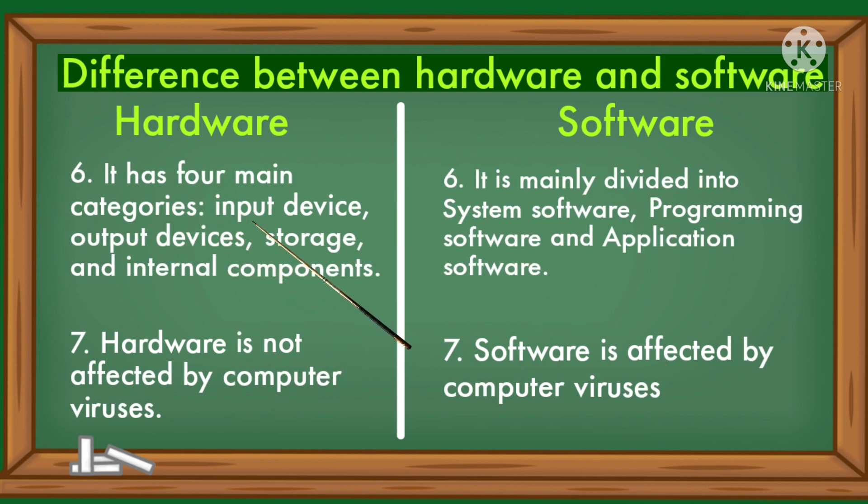Hardware has four main categories: input device, output device, storage, and internal components.